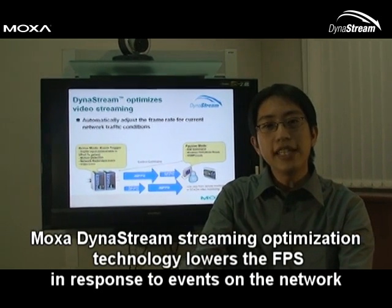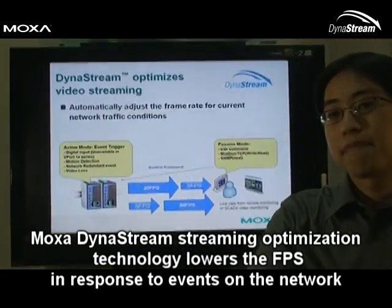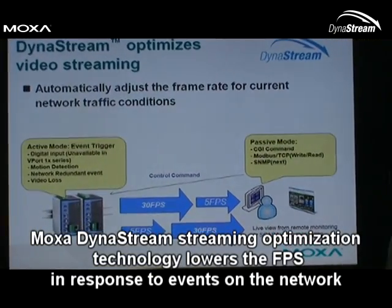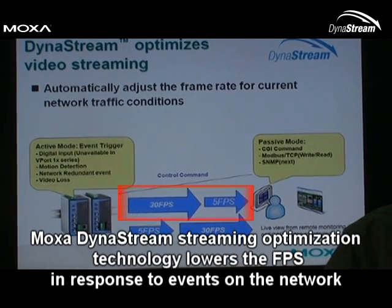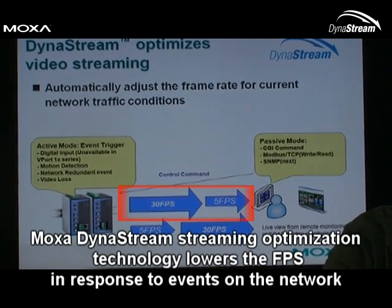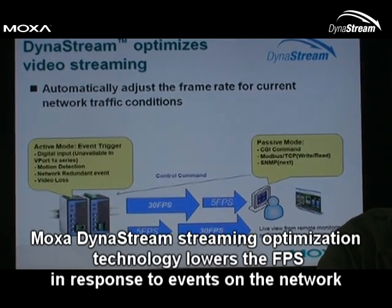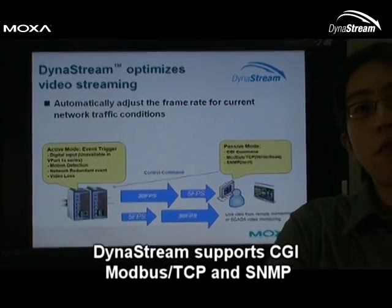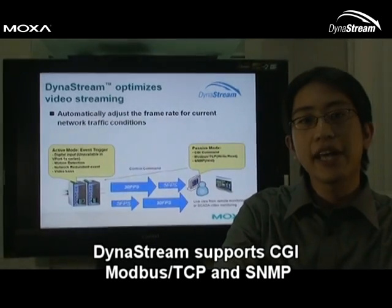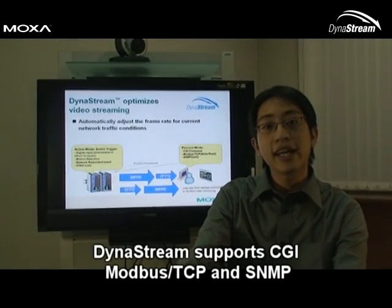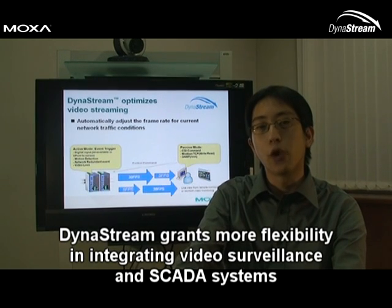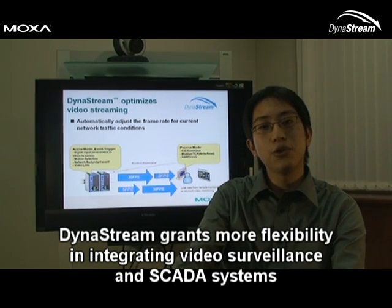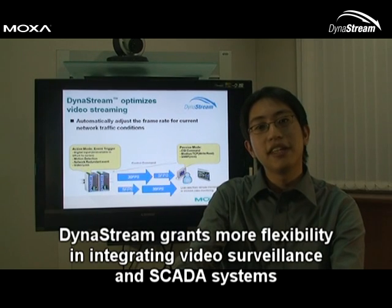Moxa's Dynastream offers a unique and exclusive new function. Dynastream can transmit at high frames per second, and then lower the frames per second in response to a network triggered event. This means that if the network is overworked, Moxa's vPort products can accept CGI, Modbus TCP, and SNMP commands and cut the video bandwidth consumption by lowering the frame rate. This gives the user even more flexibility in integrating their video surveillance and SCADA system.